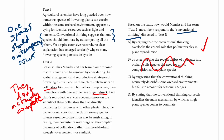Answer choice C: 'by suggesting that the conventional thinking accurately describes some orchard environments but fails to account for seasonal changes' — that would suggest a basic overall agreement, which we don't have, and there's nothing about seasonal changes. Answer choice D: 'by stating that the conventional thinking correctly identifies the main mechanism by which a single plant species comes to dominate' — that signals agreement, and also mischaracterizes the first passage, which isn't saying one species dominates but is asking why one species doesn't. So our correct answer is A.